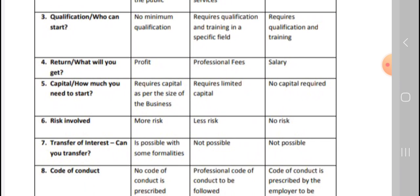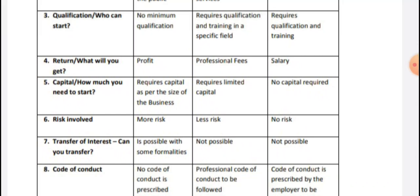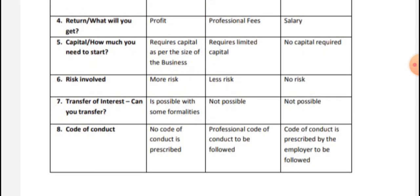Next, return: the return in business is profit. In profession, we get professional fees, and in employment the return is salary. Regarding capital: business requires a large amount of capital, profession requires some capital, and no capital is required in employment. Regarding risk: there is high risk in business. There is some risk in profession. There is no risk in employment.